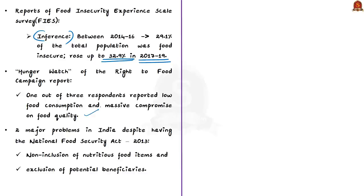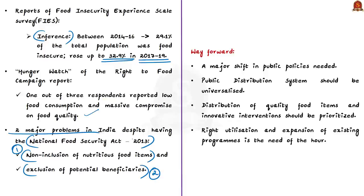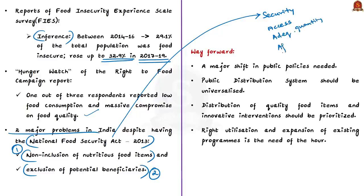The authors state that non-inclusion of nutritious food items and exclusion of potential beneficiaries are two major problems, despite the National Food Security Act of 2013. This act aims to provide food and nutritional security in a human life cycle approach and to ensure access to adequate quantity of quality food at affordable prices. Here we can find the 3A approach: accessibility, affordability, and availability.